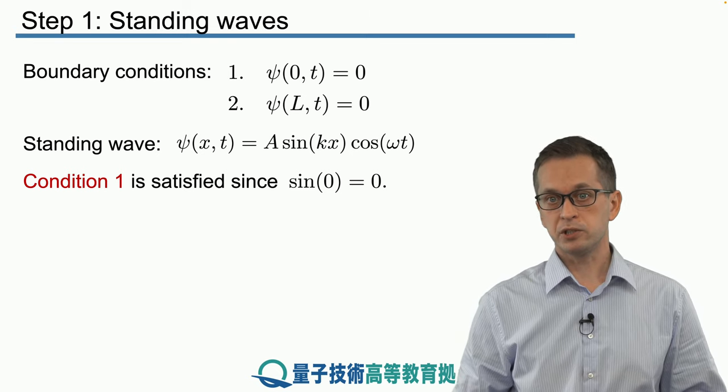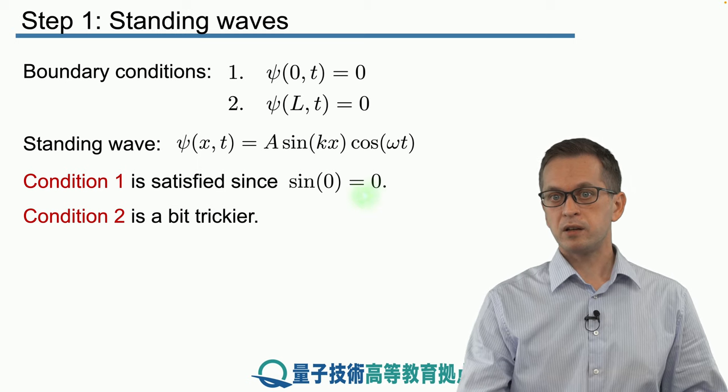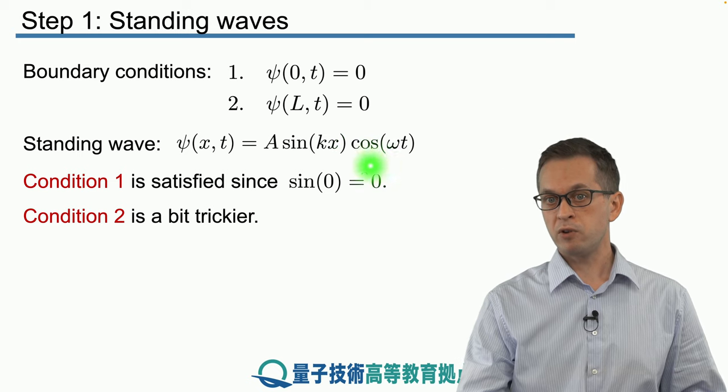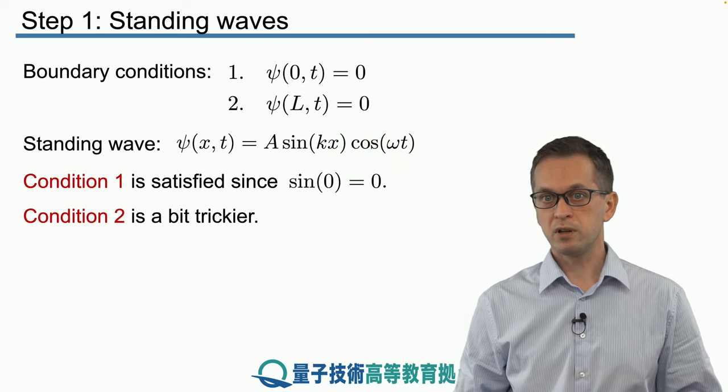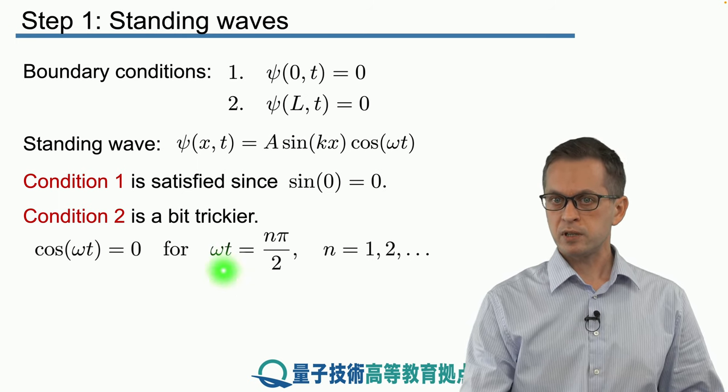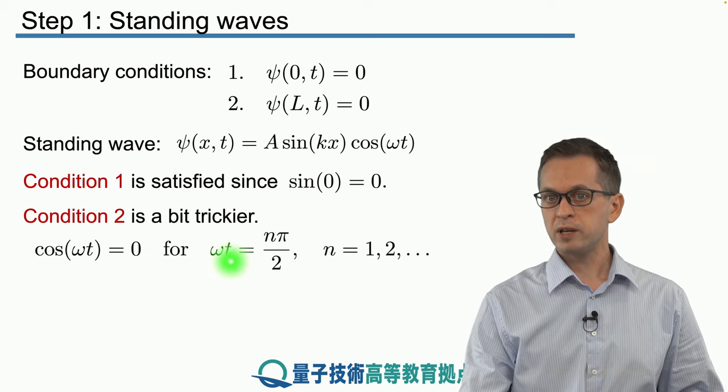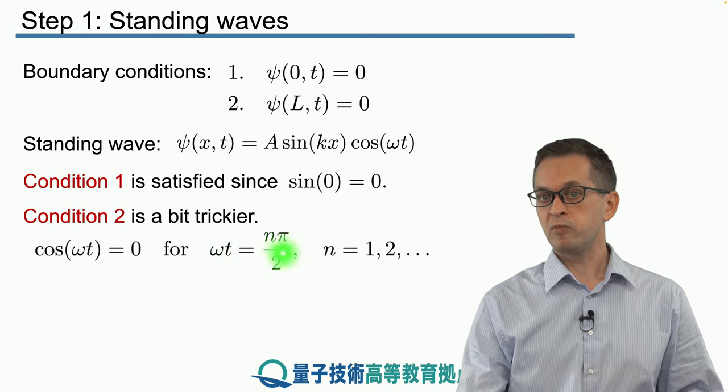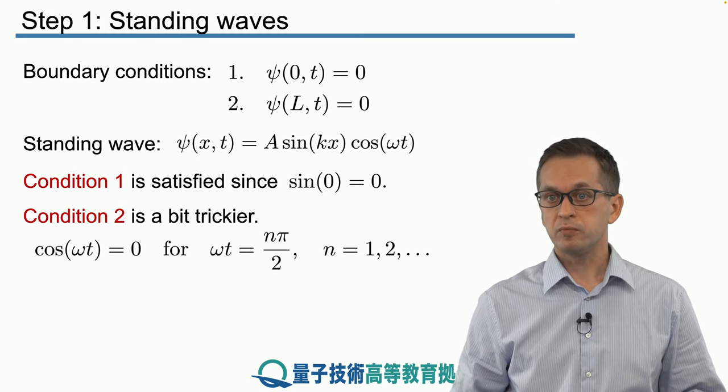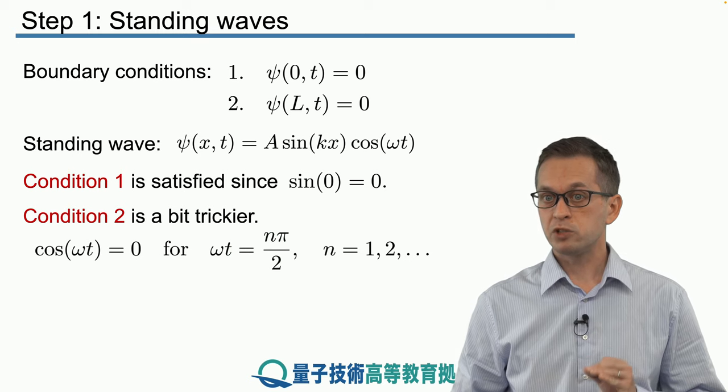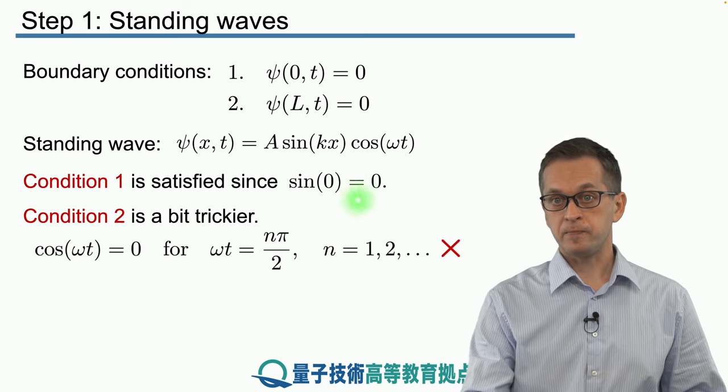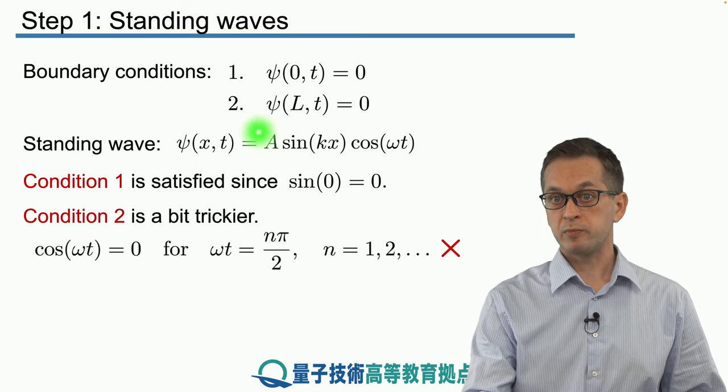What about our second condition? Well, we can say what about we can play with this term here cos omega t. When is this part zero and hence the entire expression zero? We can solve this equation cos omega t is equal to zero, and we find that at some certain times given by this expression where omega t is an integer multiple of pi over two, then our condition is satisfied. But this is not good enough because we require the boundary condition two to be satisfied for all time. Therefore, we have to look at the sine term in our expression for the standing wave.